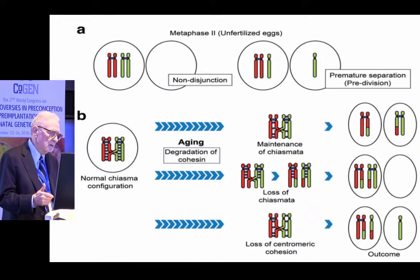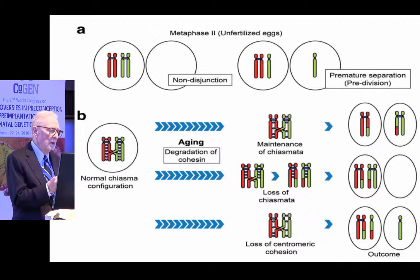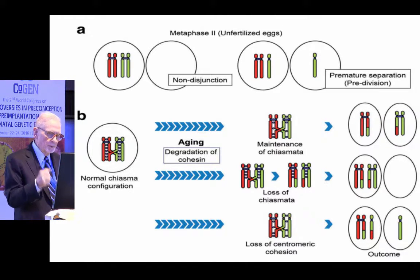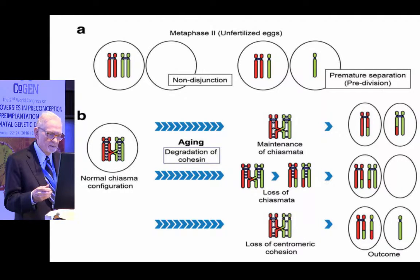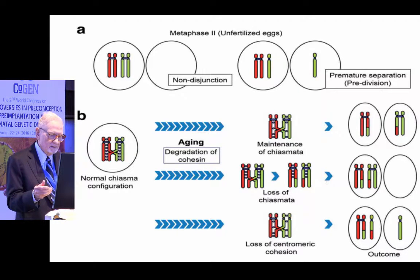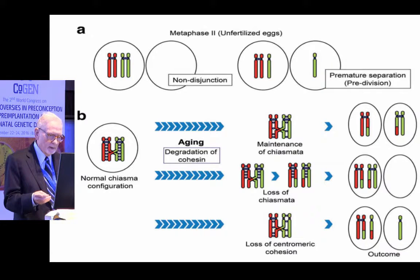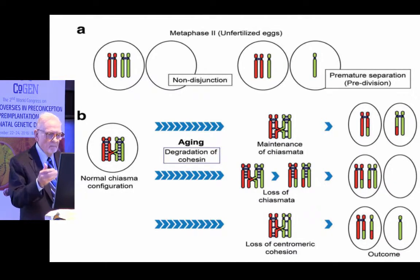I've tried to summarize this in another way. Looking at panel A in the upper left-hand corner: Angel, in the 1990s, was really the first to point out that premature separation — pre-division — was a major cause of aneuploidy, and that other causes relating to altered chromosome content of a gamete are related to the location of the chiasma. If there was a loss of chiasma, non-disjunction would be enhanced, or if you lost cohesion around and in the centromere, you would set up other mechanisms for the origin of aneuploidy.